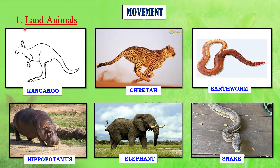Land animals move in many different ways. Many animals like kangaroo, cheetah, hippopotamus, elephant, tiger, lion and rabbit can walk, run, leap or hop. Animals that do not have limbs, like snakes, slither — meaning they move smoothly over the surface. Some, like worms and bugs, crawl on the surface.